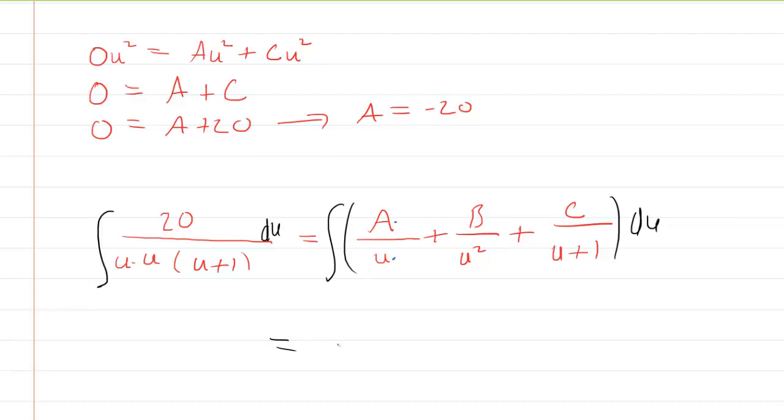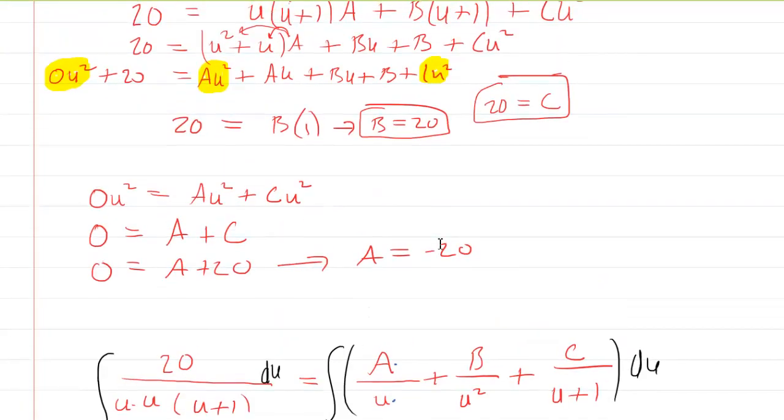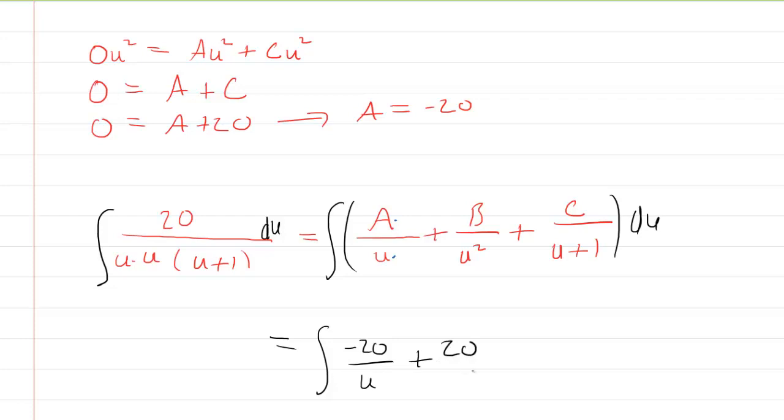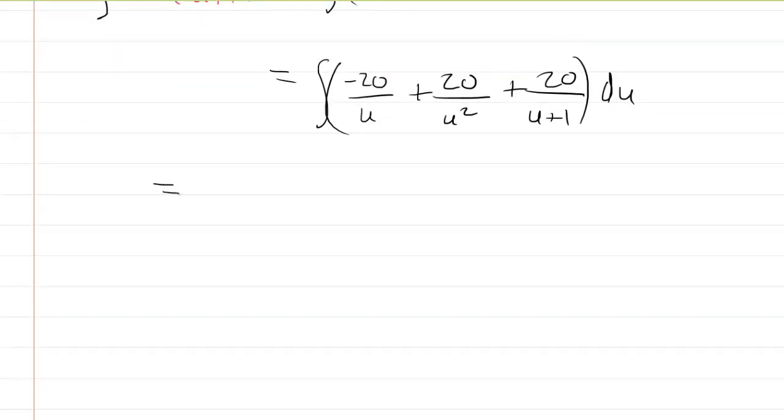And so we can see that our integral now becomes our A, which was negative 20 over u, plus our B. And our B and C were both 20, right? So this will become plus 20 over u squared. This will become plus 20 over u plus 1. And then times du. For a purist, we could probably factor out a 20. So we would have 20 times the integral of negative 1 over u plus, now this is going to become 1 over u squared, but let's write that as u to the negative 2. And then this will become 1 over u plus 1 du.